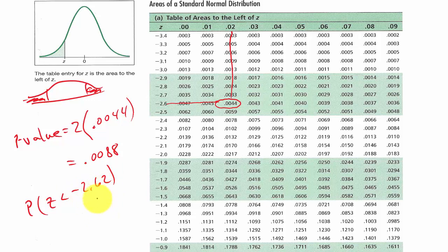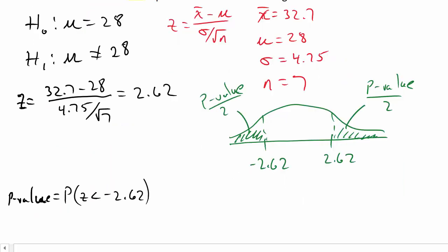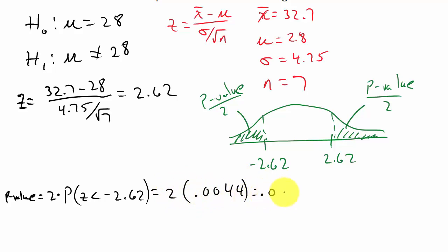So our P-value equals two times 0.0044, which is 0.0088. We need to include that factor of two because of the two-tailed test.